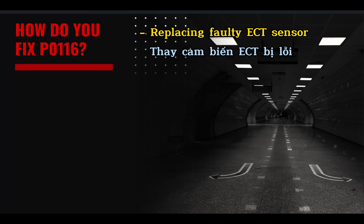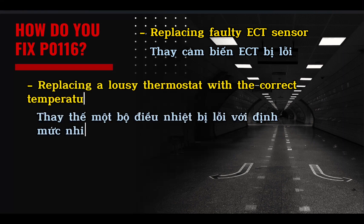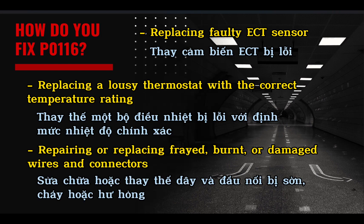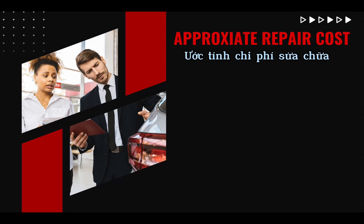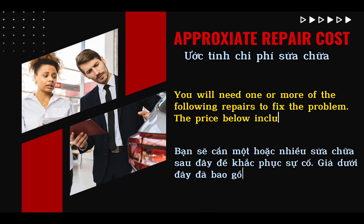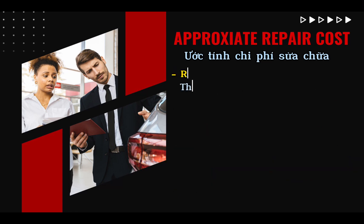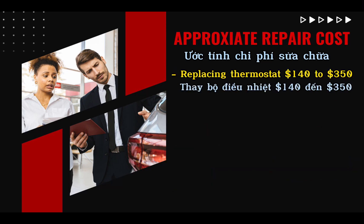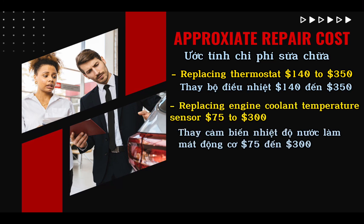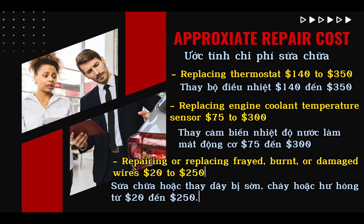How to fix: Replace a faulty ECT sensor; replace a faulty thermostat with the correct temperature rating; repair or replace frayed, burnt, or damaged wires and connectors. Approximate repair costs — you will need one or more of the following repairs. Replacing the thermostat: $140 to $350. Replacing the engine coolant temperature sensor: pricing varies. Repairing or replacing frayed, burnt, or damaged wires: $20 to $250.